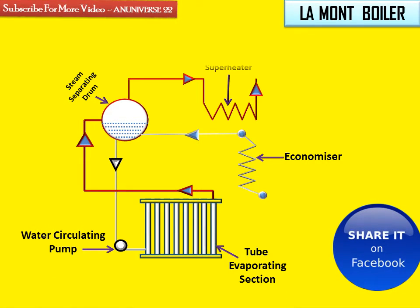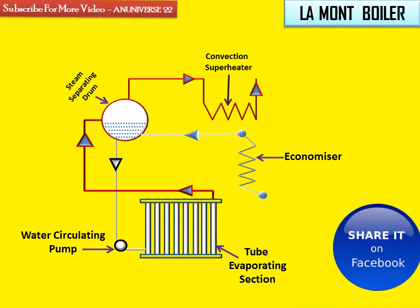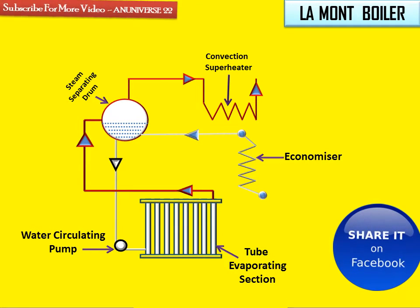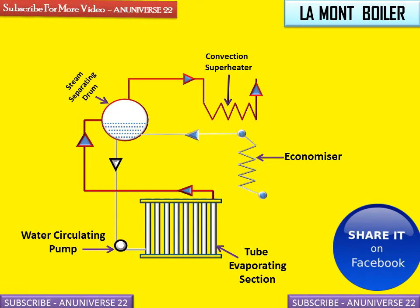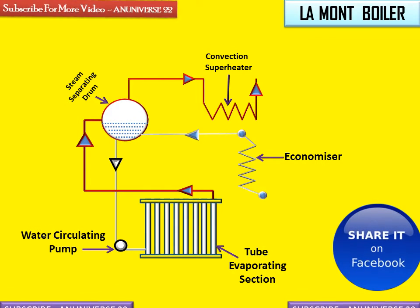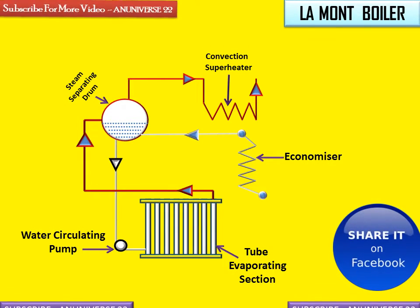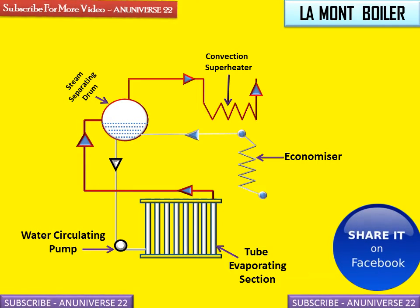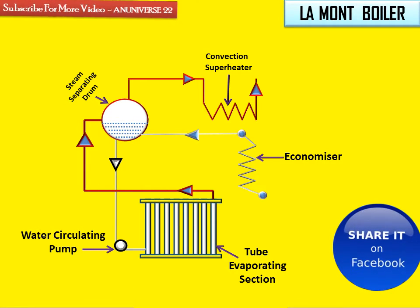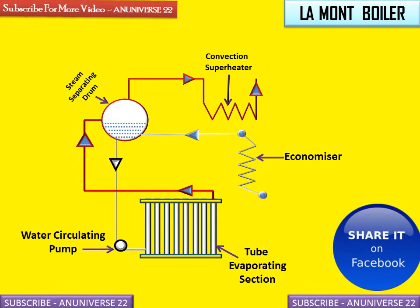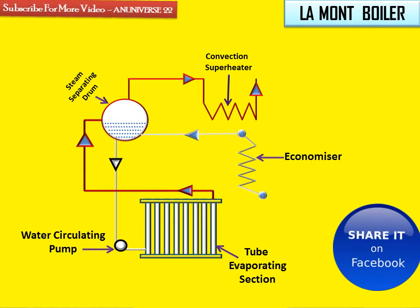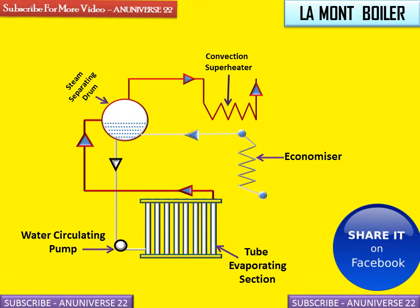This is the convection super heater. The steam generated by the evaporator tube is saturated steam. If it is directly used in a steam turbine, it can cause corrosion. So the saturated steam is sent to the super heater, where the temperature of the steam is increased.